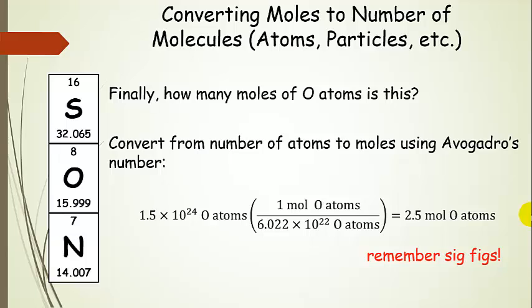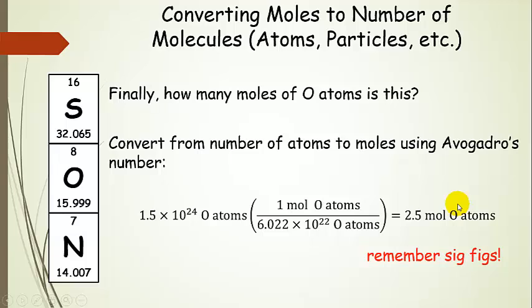One last step: how many moles of oxygen atoms is this? We calculated how many oxygen atoms are in 0.82 moles of sulfur trioxide. Now let's convert the number of oxygen atoms back to moles of oxygen atoms using Avogadro's number as a conversion factor. One mole of oxygen atoms contains 6.022 times 10 to the 23rd oxygen atoms. Taking 1.5 times 10 to the 24th and dividing by 6.022 times 10 to the 23rd, we end up with 2.5 moles of oxygen atoms — rounded to 2 sig figs.